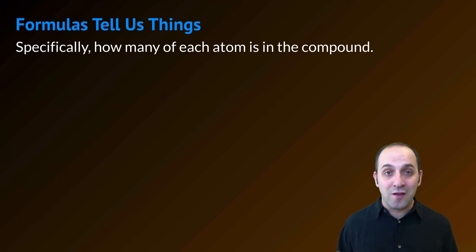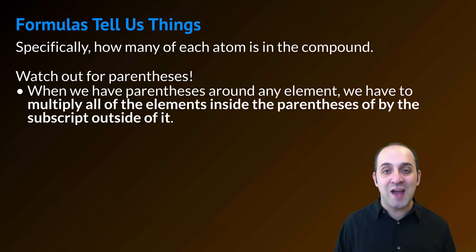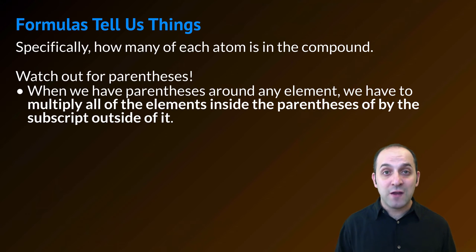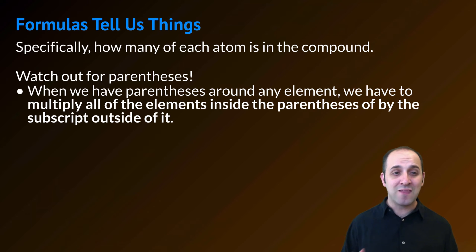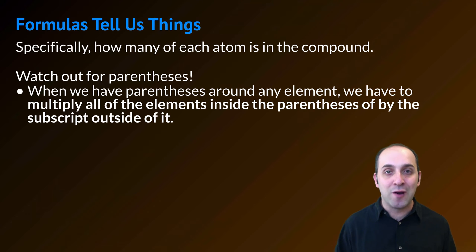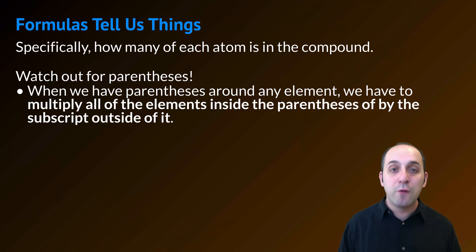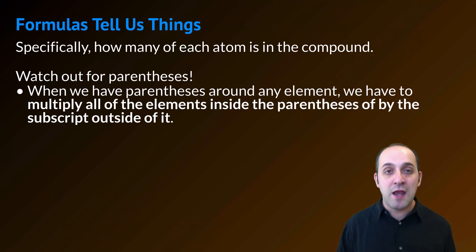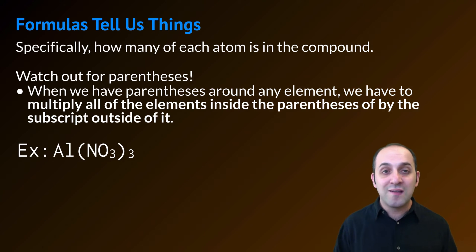Formulas tell us things. Specifically, they tell us how many of each atom is in a compound. It's important when we look at a formula to be able to figure out the number of atoms in a compound, but we also have to be really careful because parentheses can make things weird. When we have parentheses around any element, we have to multiply all of the elements inside the parentheses by the subscript that's outside of it. We would only have parentheses where there was more than one of the thing inside.